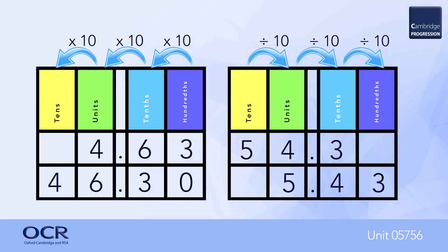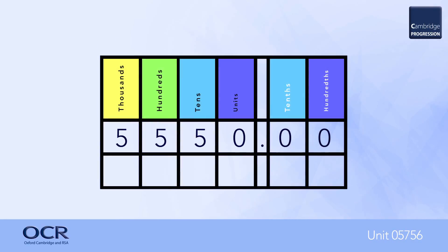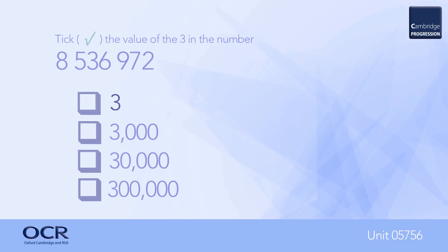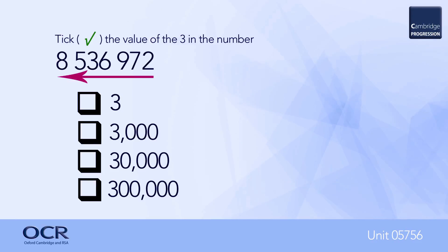It is important to remember that one hundred is ten times ten, thus the digits will move two columns to the left when multiplying by one hundred. And one thousand is ten times ten times ten, so dividing by one thousand means the digits move three columns to the right, etc. — demonstrated here by dividing five thousand five hundred and fifty by one thousand. As column headings do not appear above numbers, learners must be able to recall them, for example working from the units column to the left.